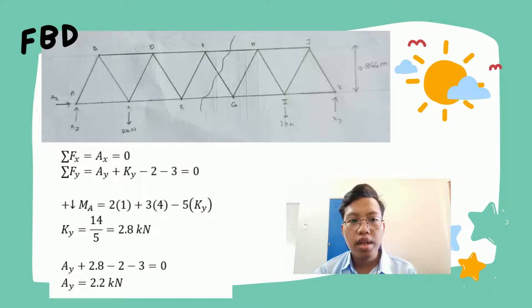To get the values of AY and KY in the equation above, we use the principle of moments. From the principle of moments, force times distance equals moment. From point C, 2 kN, we multiply by 1 because the distance from A to C is 1 meter. Next, at point I, we have 3 kN and the distance from A to I is 4 meters. Next is KY. The distance of KY from A to K is 5 meters. We substitute into the equation, and we will get KY equals 2.8 kN. After we get KY, we can substitute the value into sum of FY, and we will get force AY equals 2.2 kN.